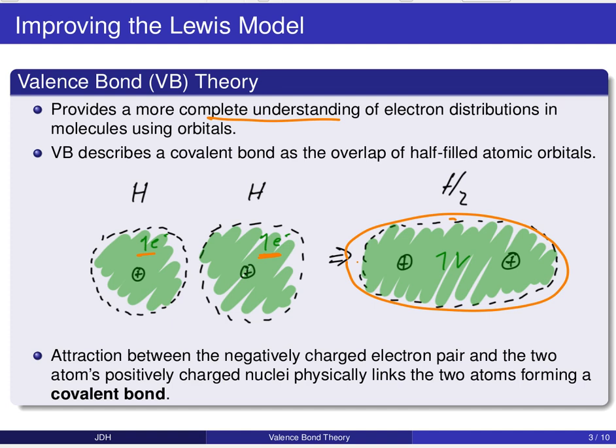And once again, the fact that this probability density is spread out over both of these nuclei, we're still getting that attractive force, that binding force, so those electrons are really serving as that glue, that electrostatic glue holding the two nuclei together. And so that's our covalent bond, an overlap of these two orbitals.